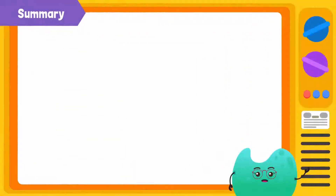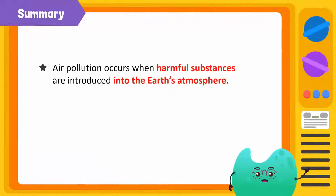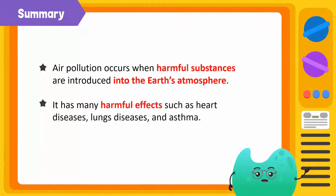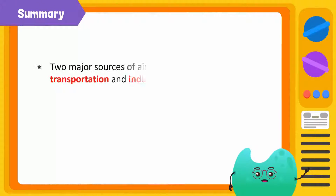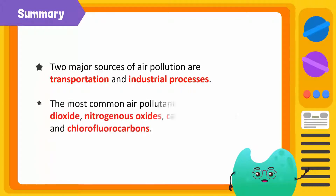To summarize: air pollution occurs when harmful substances are introduced into the earth's atmosphere. It has many harmful effects such as heart disease, lung disease, and asthma. Two major sources of air pollution are transportation and industrial processes. The most common air pollutants are sulfur dioxide, nitrogen oxides, carbon monoxide, and chlorofluorocarbons.